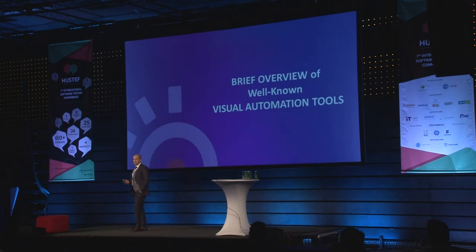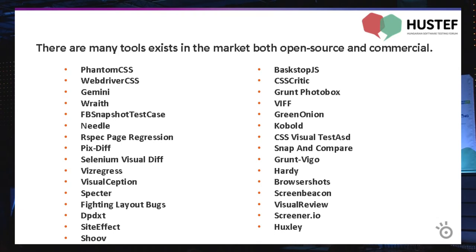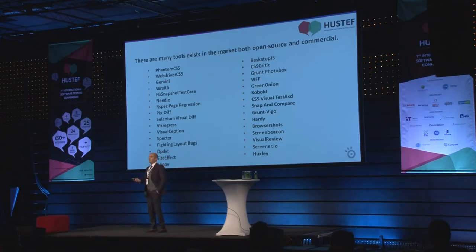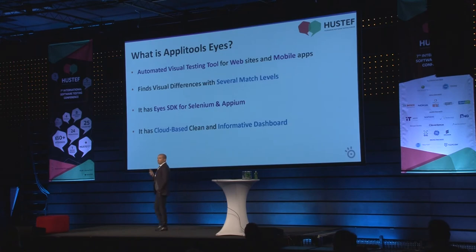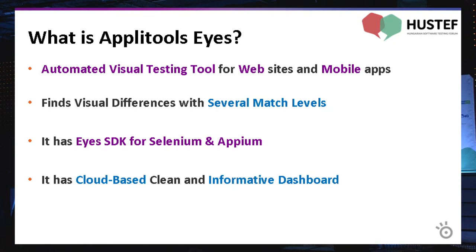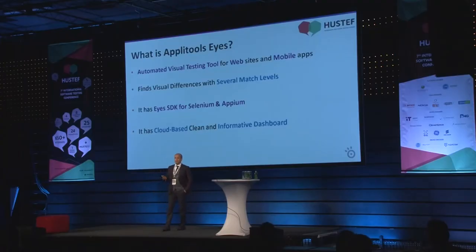Now I'll go on with the tools. There are a lot of visual test automation tools in the market; I will cover the well-known ones. The first one is Applitools Eyes. It's a commercial automated visual testing tool for web and mobile applications. It finds visual differences using match levels, which I'll explain shortly. If you have a Selenium or Appium-based test automation framework, you can easily integrate Applitools Eyes using the Eyes SDK. It also has a very clean, informative, cloud-based dashboard.